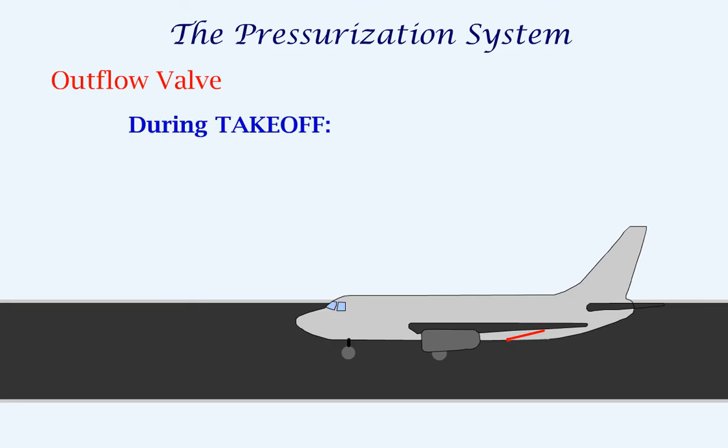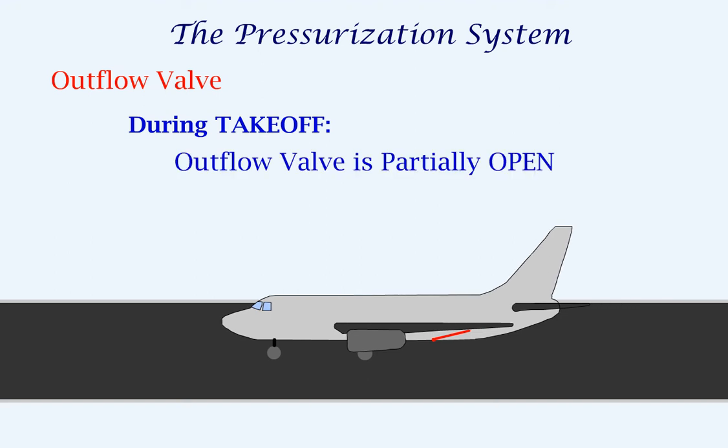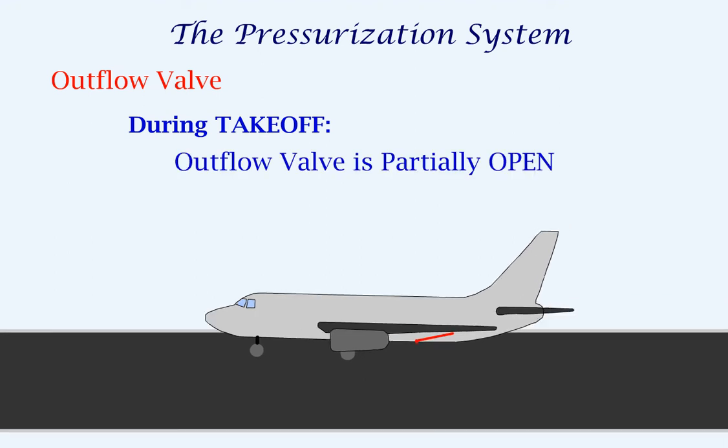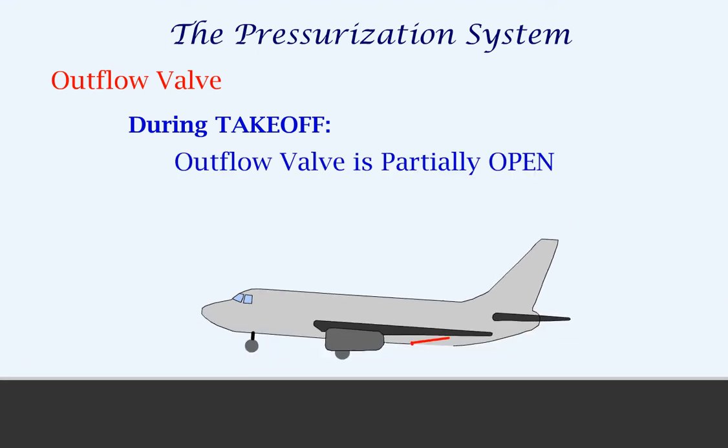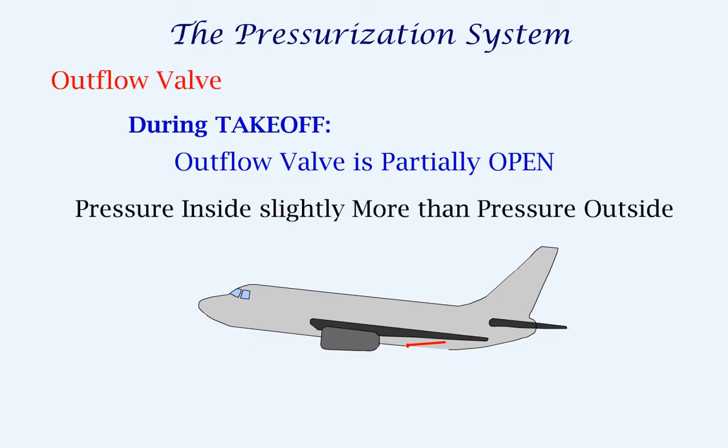During takeoff, the outflow valve is kept partially open so that the pressure reduces but is still kept higher than the ambient pressure.